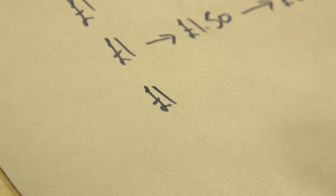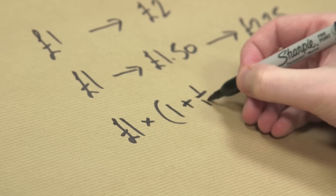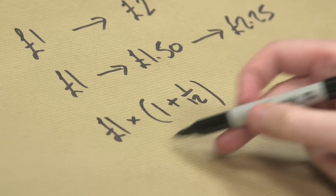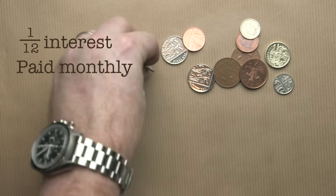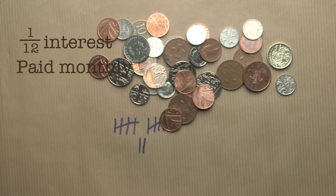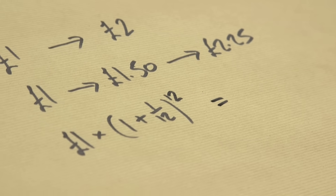What happens if I do this more regularly? What if I do it every month? After the first month, it's going to be multiplied by one plus one twelfth — one twelfth is your interest, and then you're adding that on to the original pound. That's your first month, and then for your second month you take that and multiply it again by the same value, and then your third month you would multiply it again and again. You would raise that to the power of twelve, and you would get £2.61. So it's actually better.